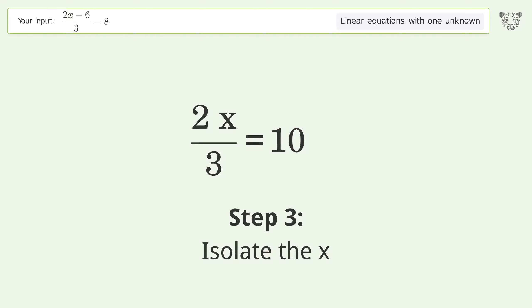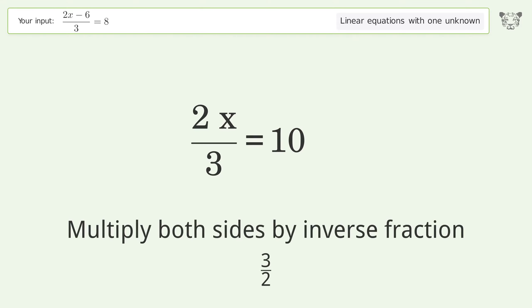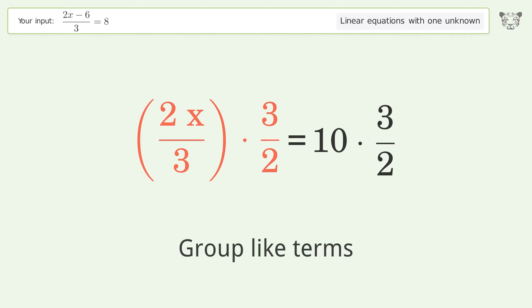Isolate the x. Multiply both sides by inverse fraction 3 over 2. Group like terms.